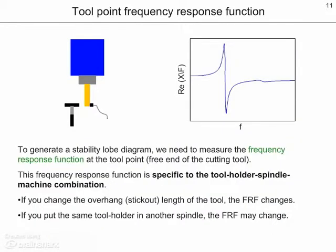In order to generate a stability lobe diagram, we need to measure the frequency response function at the tool point, or the free end of the cutting tool. We perform this operation by exciting the tool with a small modal hammer, and recording the response with a transducer such as an accelerometer. This measured frequency response function is specific to the tool, holder, spindle, machine combination selected for testing. It's important to note that if you change the overhang or stick-out length of the tool, the frequency response function changes. Likewise, if you put the same tool-holder combination in another spindle, the FRF may change if that spindle's dynamics are not the same.